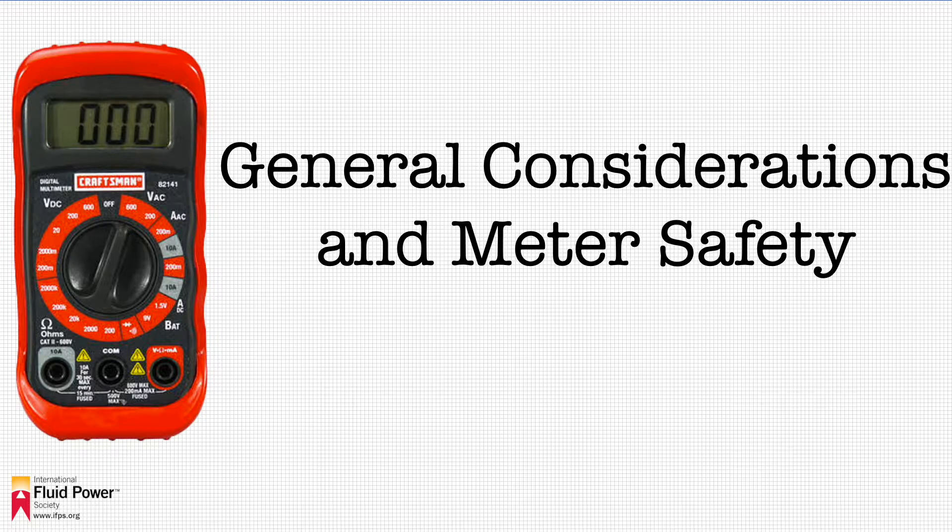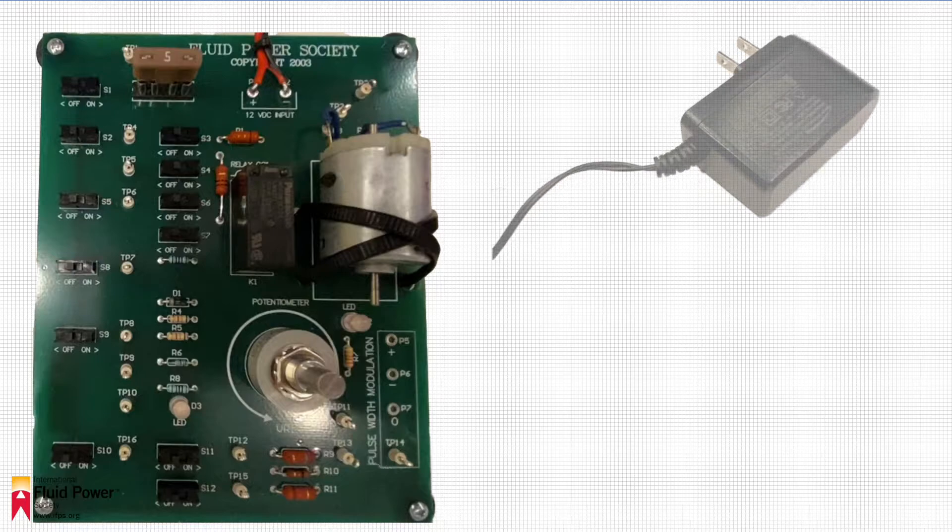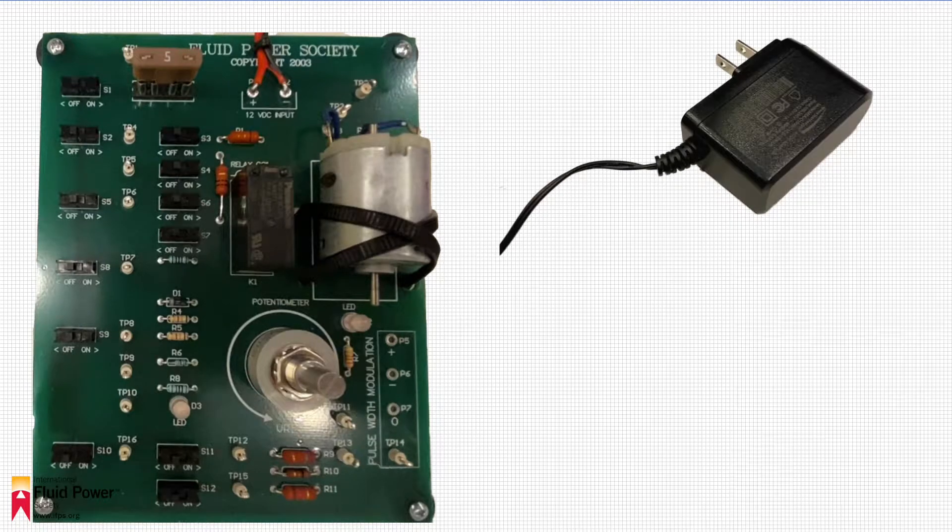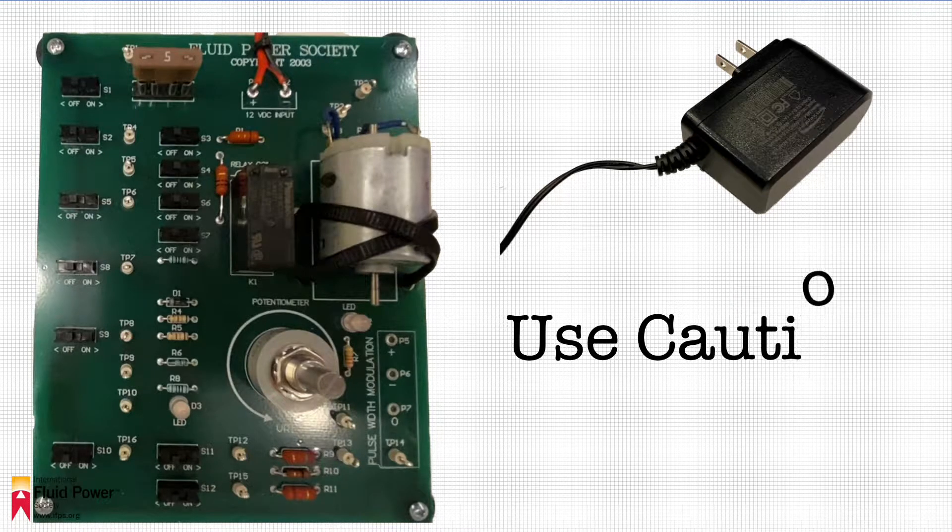General considerations and meter safety. The circuit board is powered with 12 volt DC. A transformer is used to provide this power. It is unlikely that harmful current will be present.